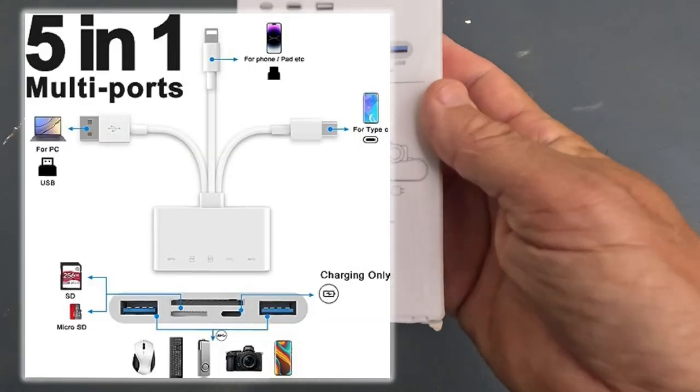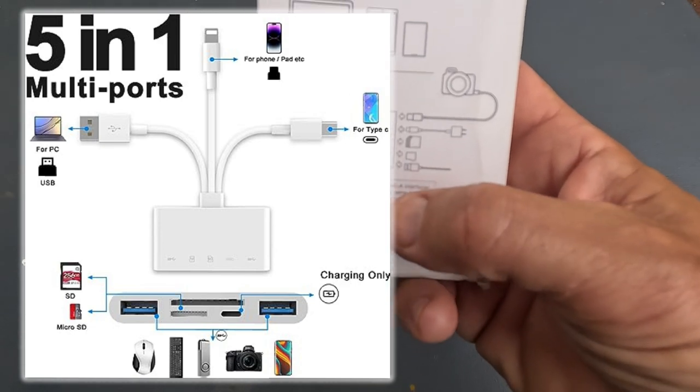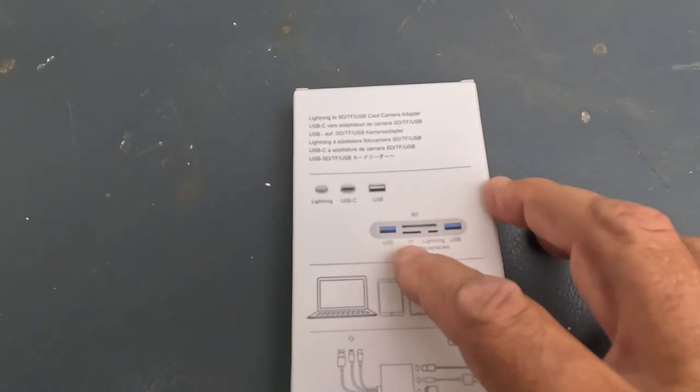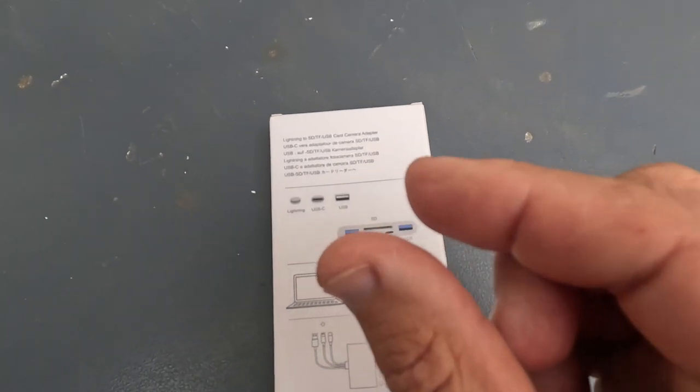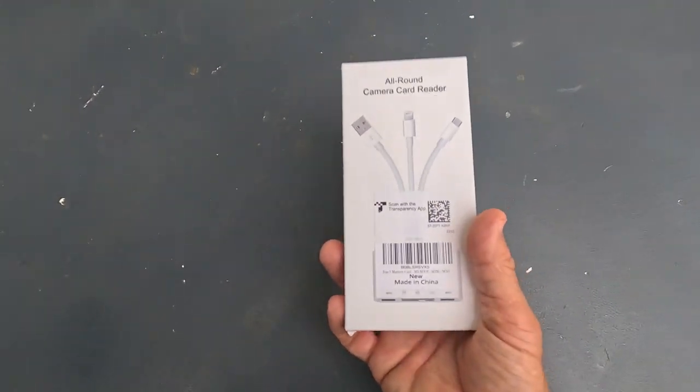You can see the attachment here—it has Lightning, USB-C, USB-A, and it can all be used. There's the TF, which is the micro SD card. Let's open this thing up and let me show you exactly what you get with this.